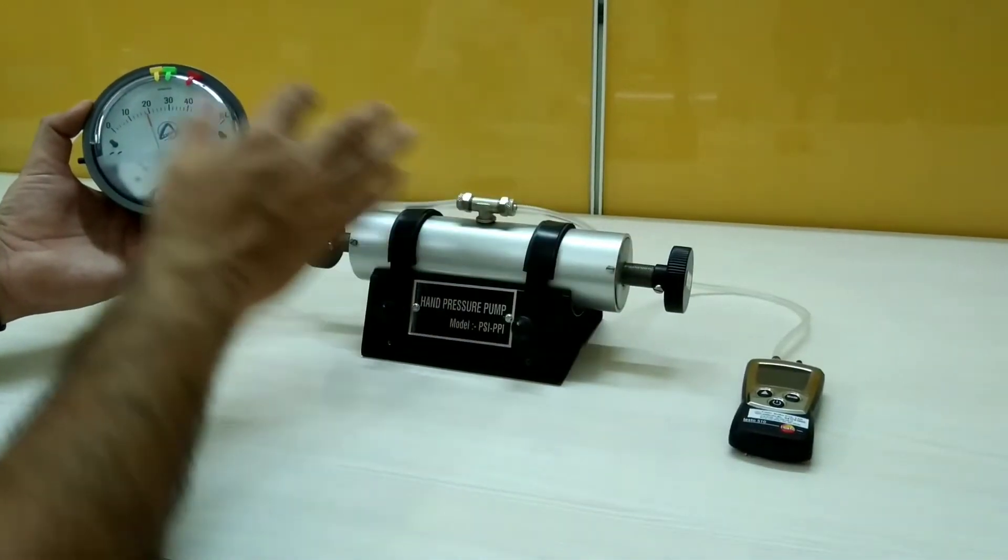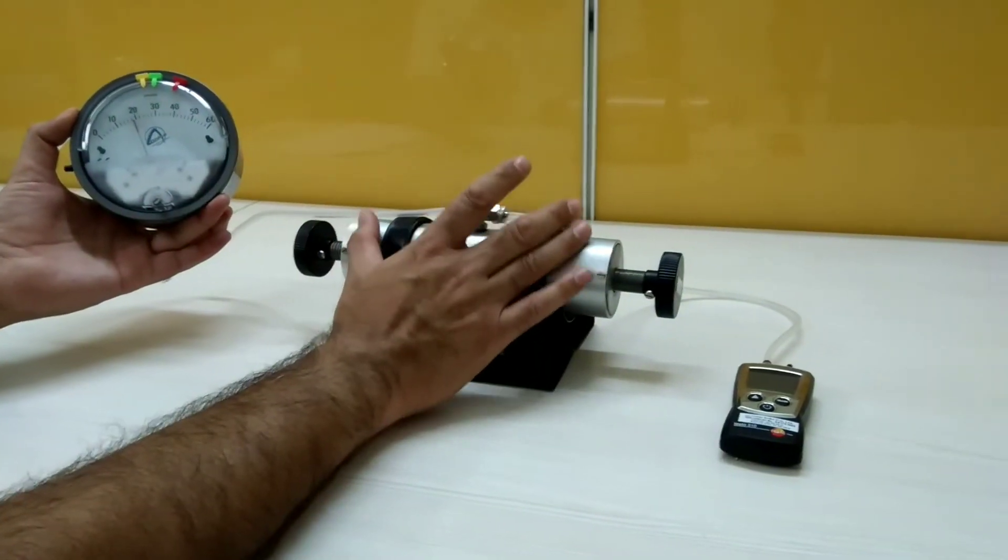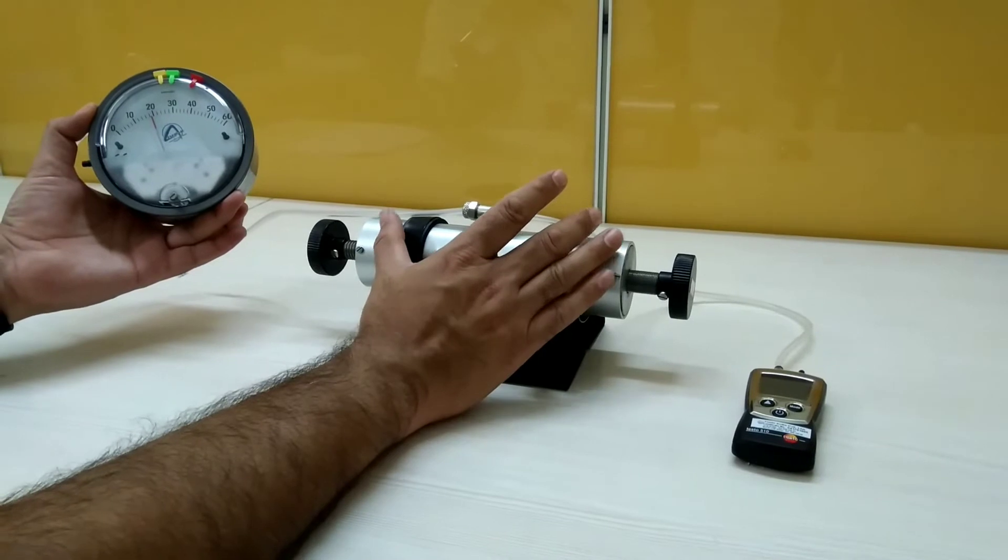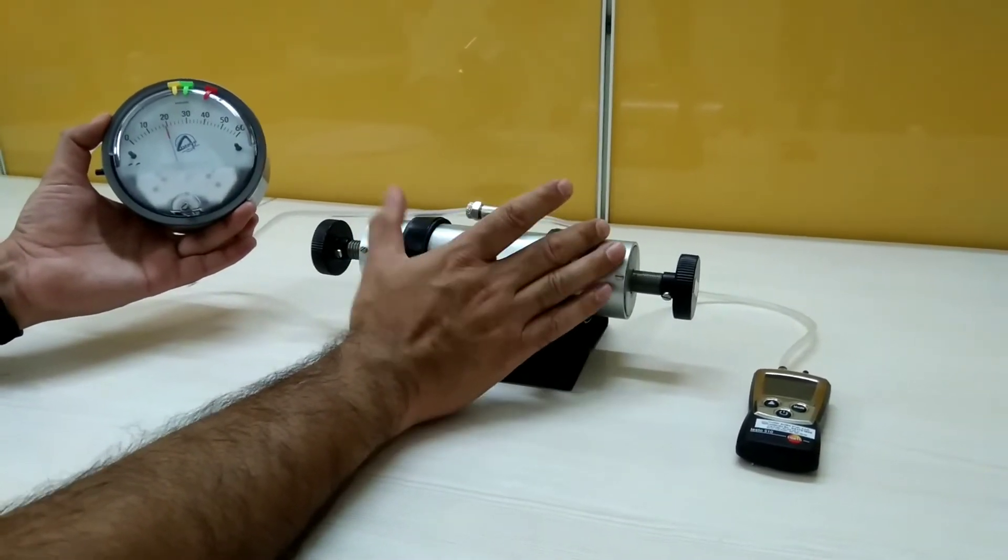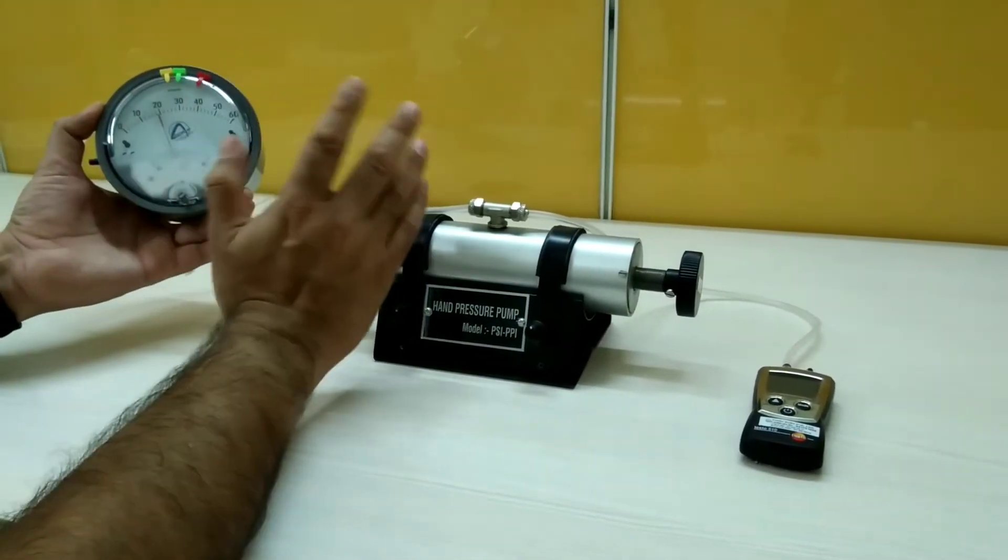Use this as the master and this is the gauge under calibration. This particular static pressure pump or calibration pump is great for calibrating differential pressure gauges like Dwyer, Sensocon, etc.